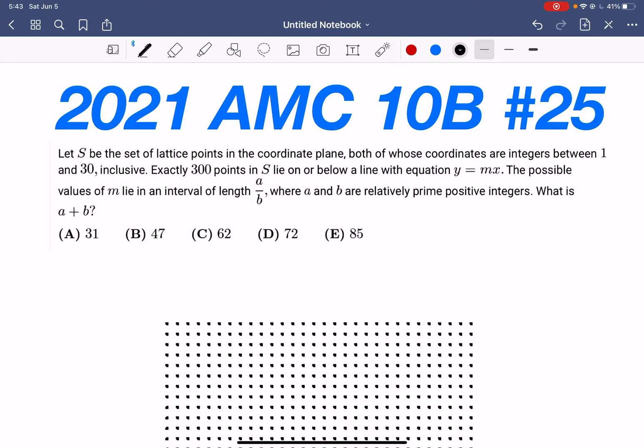The problem states that there are a set of lattice points between 1 and 30, so that will result in 30 squared or 900 points in total in the lattice point. And there is an equation that crosses over the origin of the plane.